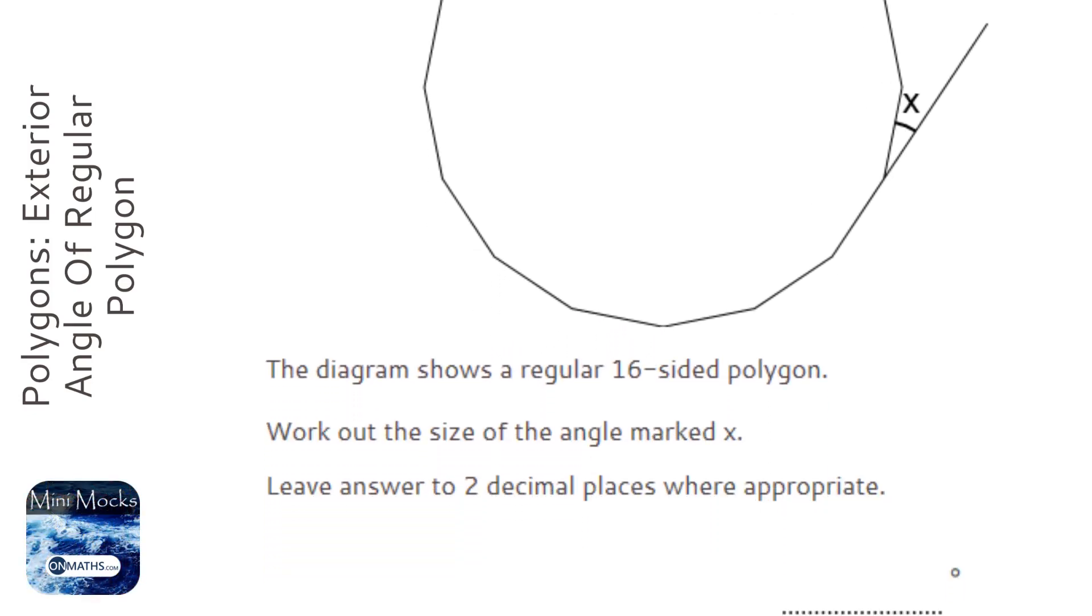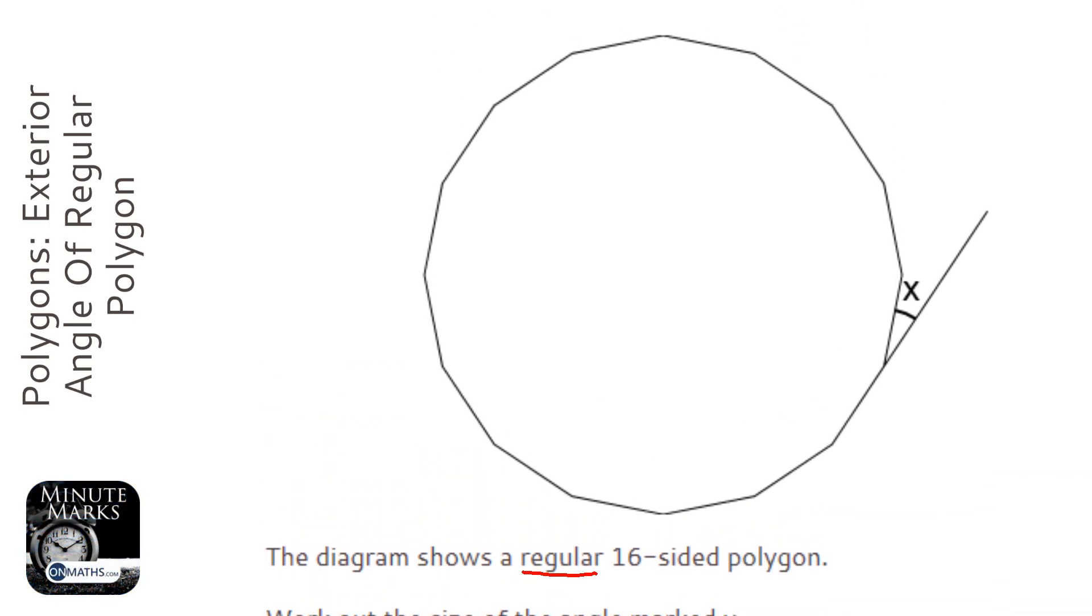We're given a regular polygon, so that's going to be quite an important word there. Regular means that all of the sides, angles, and exterior angles in this polygon are exactly the same. So if I added another one here, this would also be x. If I put another exterior angle here, all the way around, they're all x, they're all the same, and there's 16 of them in total.